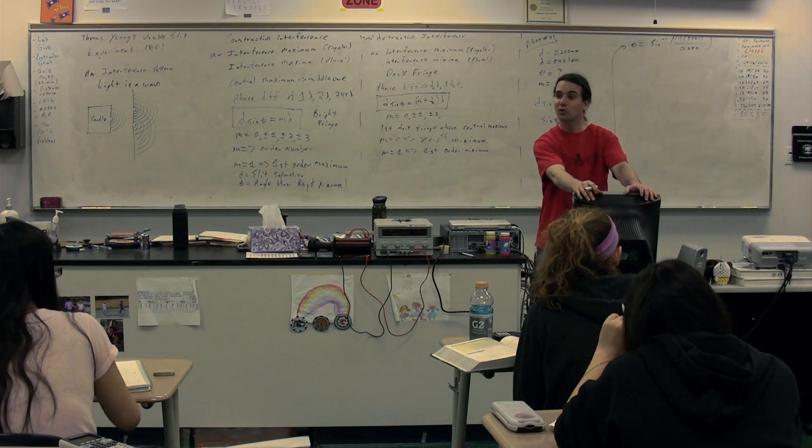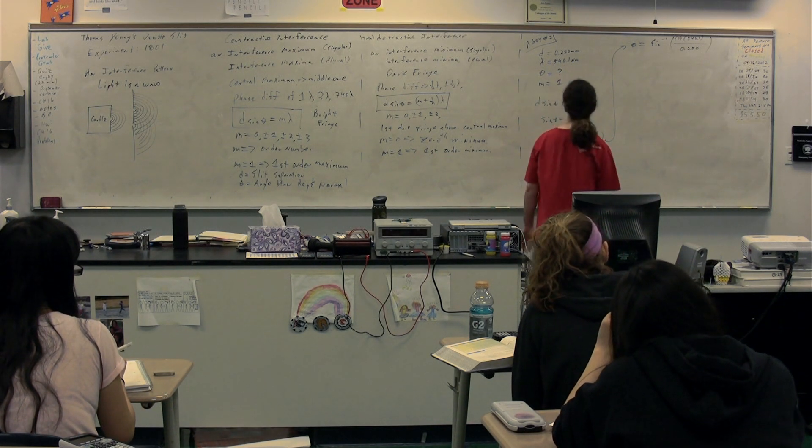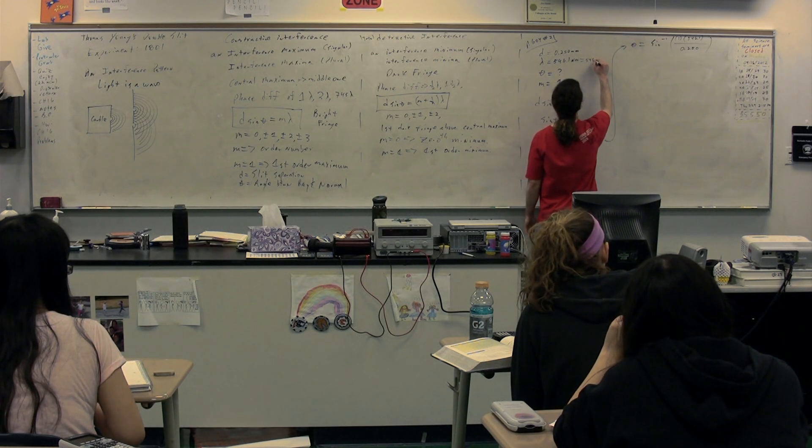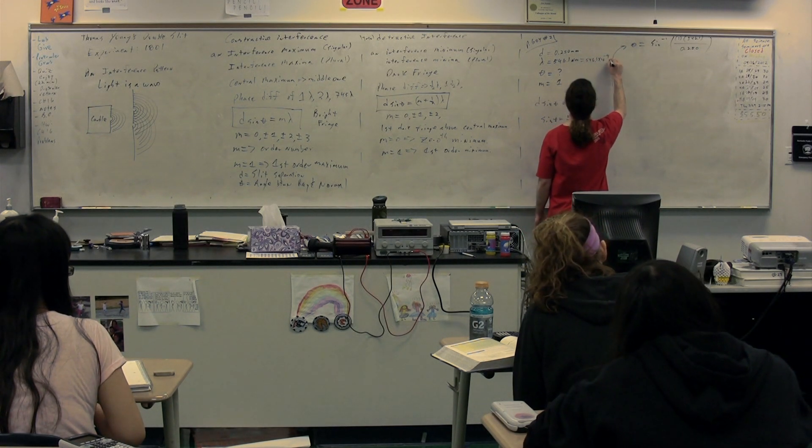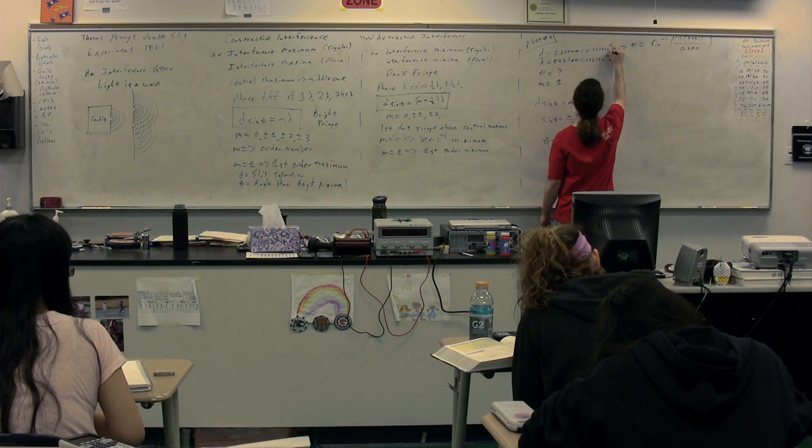They need to be in the same units. Correct. We need the same dimensions. The easiest way to do this is just convert to meters. So we'll do 546.1 times 10 to the negative 9 meters and 0.250 times 10 to the negative 3 meters.